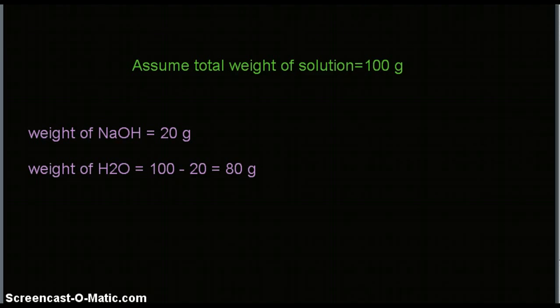If the weight of the solution is 100 grams, the weight of NaOH is 20 grams, which is given, and the weight of H2O will be the remaining, that is 100 minus 20, which equals 80 grams.